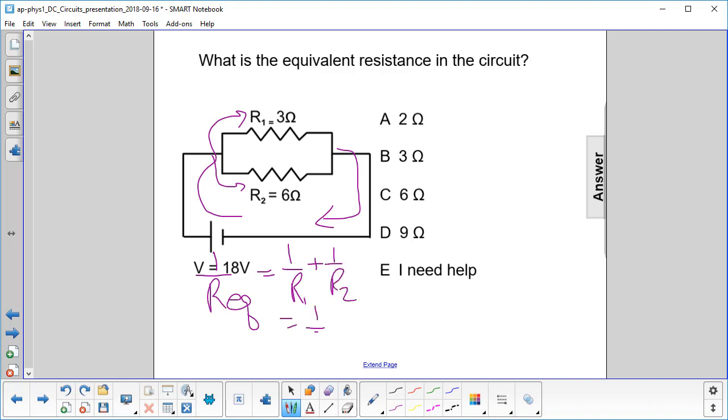Which is one over three plus one over six. You can do this just with fractions here, so you have two sixths plus one sixth equals three sixths. Now this is not your answer; that's one over R equivalent.